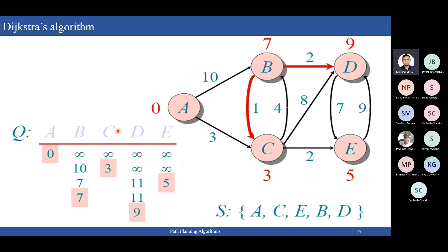Finally, we explore node D with cost 9. So we have defined all optimal costs from node A to every other node. If we want to go from A to C, the minimum cost is 3 — we take the direct path. If goal is B, minimum cost is 7, so we take the path A→C→B (3 + 4 = 7) rather than A→B directly (cost 10). If goal is E, cost is 5 via A→C→E. If goal is D, cost is 9 via A→C→B→D (3 + 4 + 2 = 9).